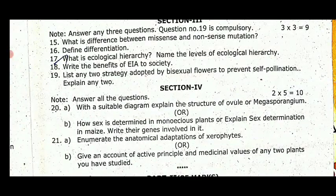Section 4 — five-mark questions. With a suitable diagram, explain the structure of ovule (megasporangium) — draw the ovule diagram and label the points. How is sex determination in monoecious plants done? Explain sex determination in mice and write the genes involved. Also cover: use of genetic engineering, applications, and man-made cereals.